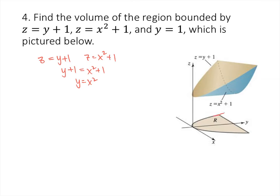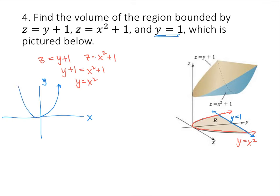I'm also told I'm bounded by the surface y equals 1, which is a plane parallel to the xz-plane. So if I draw the region R in a top-down view with the x-axis and y-axis, that region is bounded by the curve y equals x squared and the line y equals 1. To set up the double integral for volume, I integrate the top surface minus the bottom surface, which is (y plus 1) minus (x squared plus 1). I can tell which one is on top by looking at the picture.